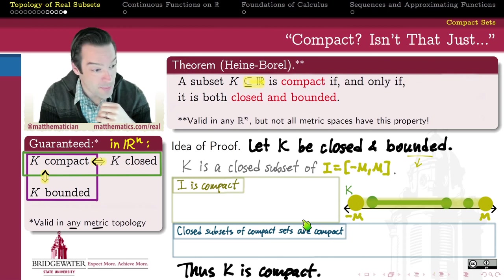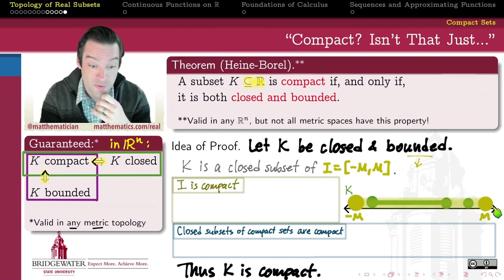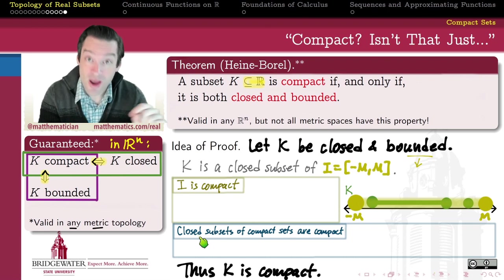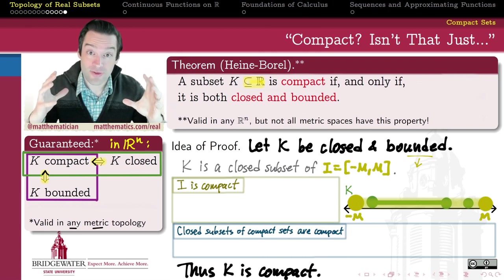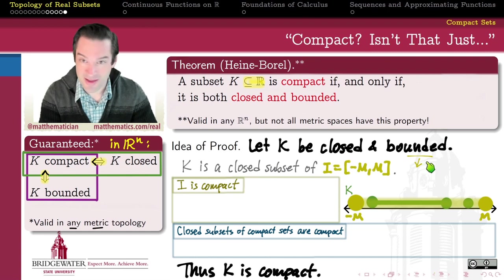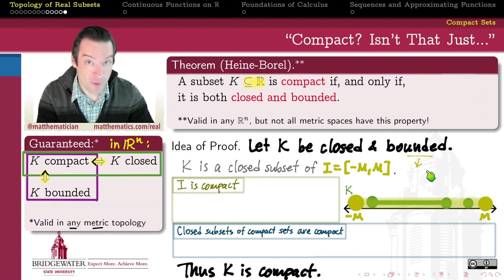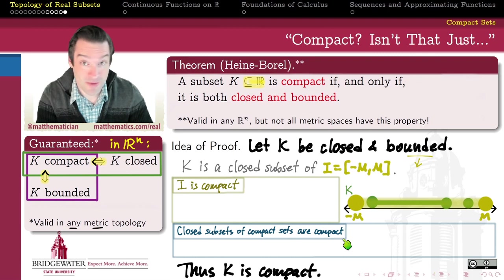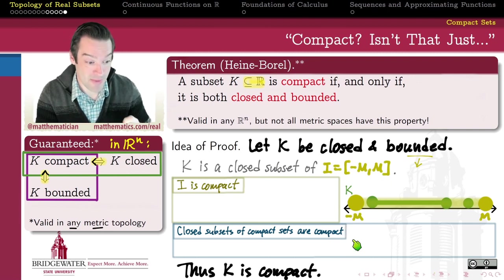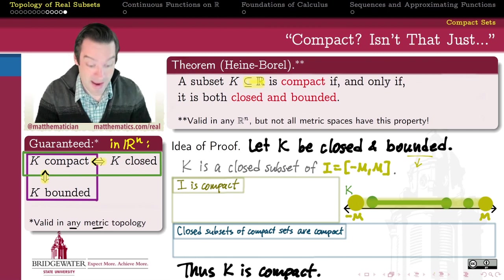Let's imagine a subset of the real line that is closed and bounded — perhaps a closed interval together with some isolated singletons. Because K is bounded, there is some closed interval [-M, M] of which K is a subset. So K could be really complex, but we know it's a subset of a single closed interval from -M to M for some real number M, and K is a closed subset of that interval. Our two-step proof will first show that the interval [-M, M] is compact, then show that every closed subset of a compact set gets to be compact.